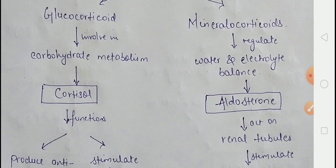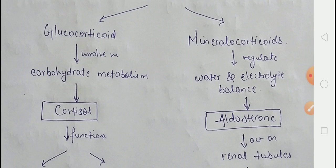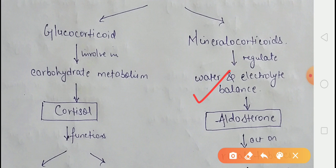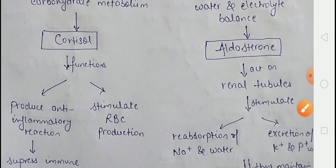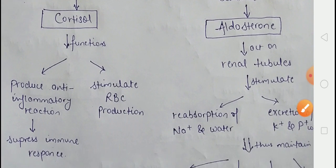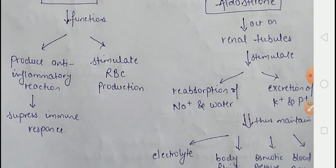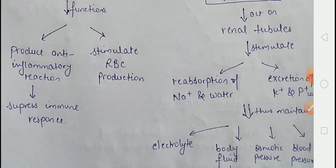Mineralocorticoids are normally involved in water and electrolyte balance. The main mineralocorticoid is aldosterone, which acts on our renal tubules and stimulates sodium and water reabsorption, and stimulates potassium excretion.